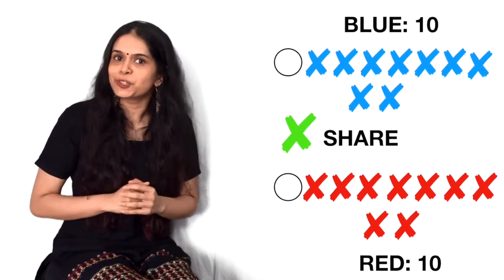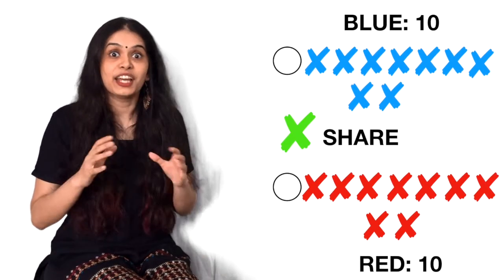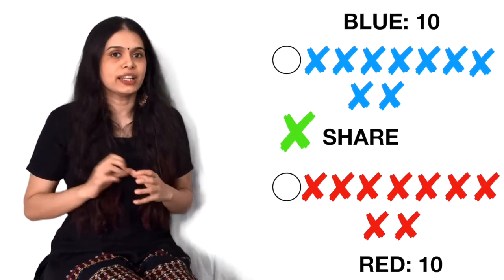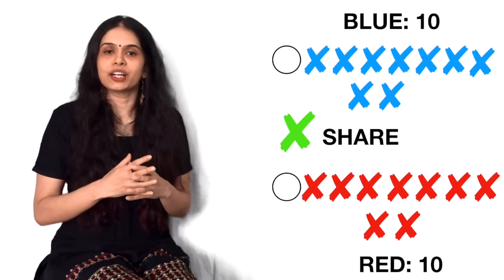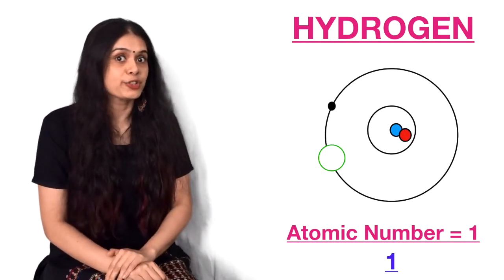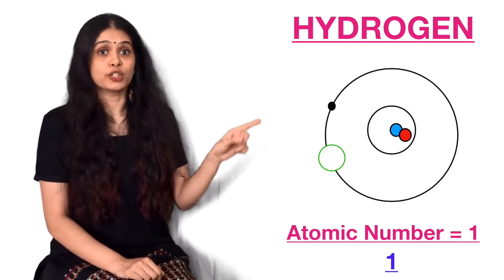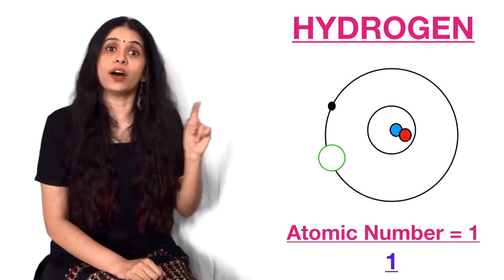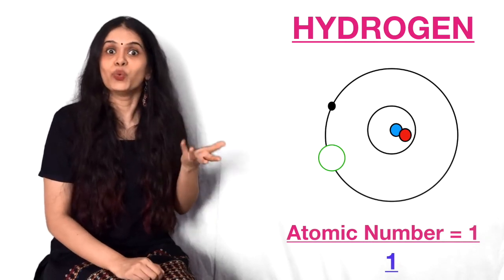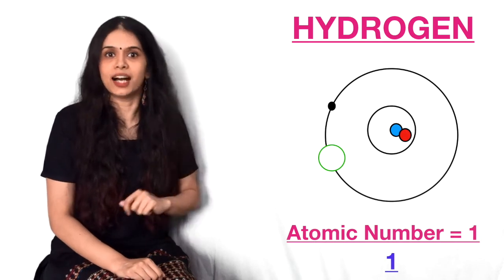So now what does this have to do with atoms and molecules? Well, atoms and molecules also work a little like this. They share electrons. Atoms ke andar jo electrons hote hai, jo khali jaga hoti hai na shell pe, to woh khali jaga atoms bharne ki koshish karte hai. So like we have hydrogen. The atomic number of hydrogen is one. Matlab, one proton hai. And one proton hai matlab, one electron. So in the first shell, there is one electron. Iska matlab, jo doosra seat hai, jo first wale shell ke andar, woh toh khali hai. Hai na? Toh ek seat mein ek electron hai, doosra seat khali hai in hydrogen.